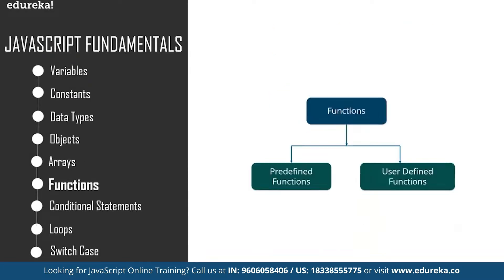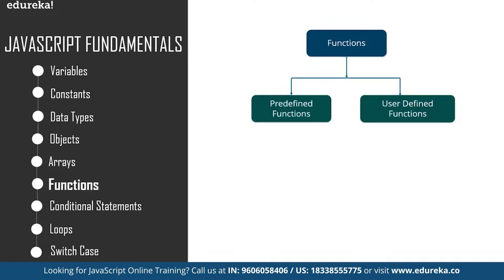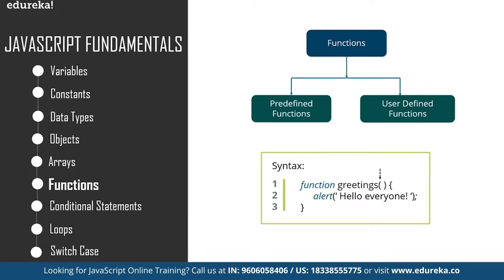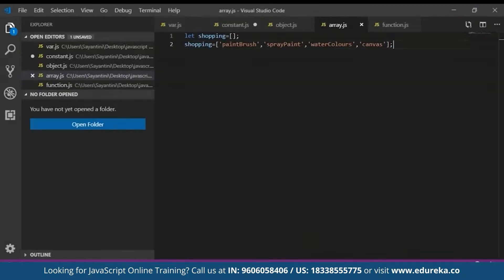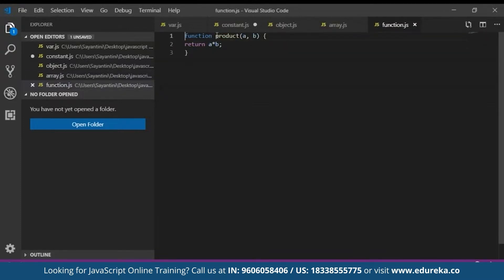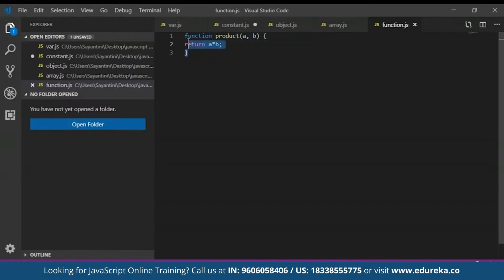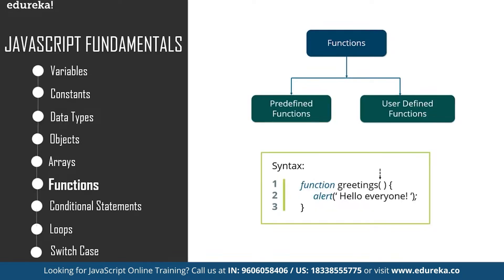A function is basically a block of organized, reusable code that is used to perform a single related action. Let's create a function that calculates the product of two numbers. To declare a function in JavaScript, we use the keyword 'function'. For example, you type 'function product(a, b)' and then return the value of a times b — this gives you the product of those two values. The function is called 'product' and takes two parameters, a and b, whose product is returned.